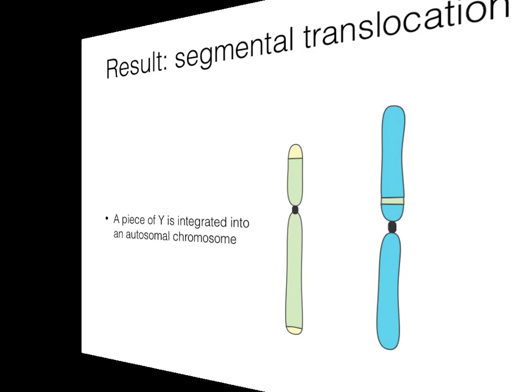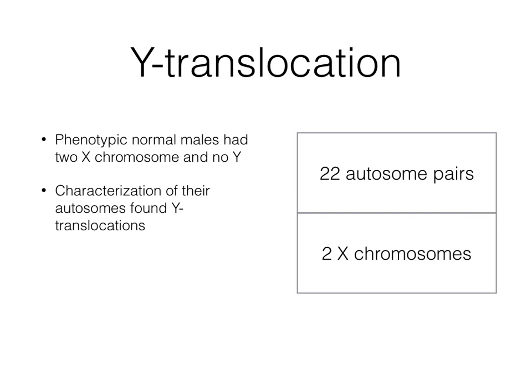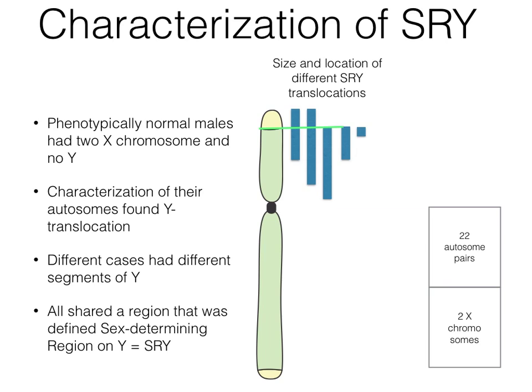The existence of Y-to-autosome translocations were discovered when normal males were found to have two X chromosomes and no Y. The individuals with this karyotype should have been females. Characterization of their autosomes found Y translocations of different types. By comparing the different translocations, they were found to share a common region called the sex-determining region on Y, abbreviated as SRY.